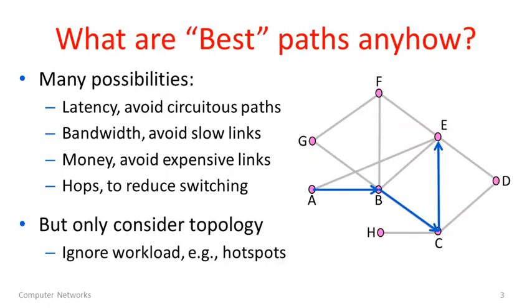Let me go into that in a little more detail. We would like routing to find best paths or good paths. Well what are they? It really depends on what you, the network operator, want. There are many different possibilities here. You might want a good path to have low latency because this would avoid a circuitous route. There's no need to go from the west coast to the east coast and back if you could avoid it.